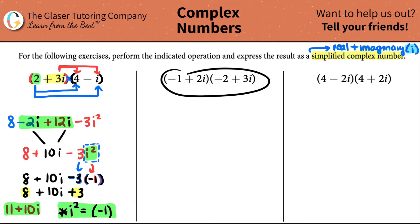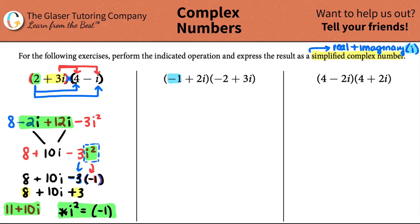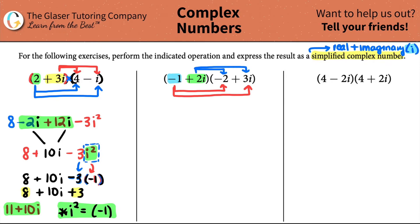Let's do the same idea for the second one. I have two parentheses being multiplied, so I need to play fair. Starting with the negative one on the left: negative one wants to be multiplied by negative two, but also by the three i — you must multiply by all terms in the next parenthesis. Then we work with the next term, plus two i, which wants to be multiplied by negative two and also by positive three i.